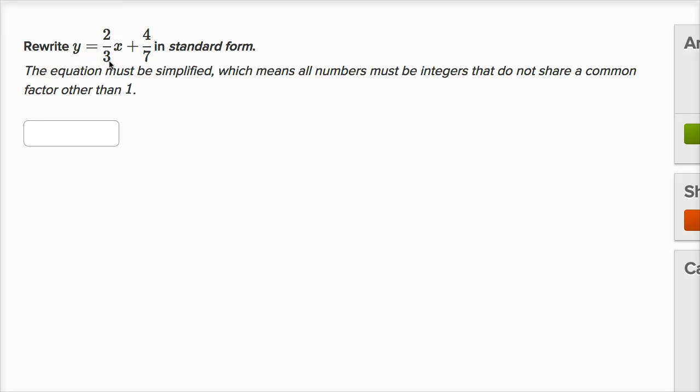Rewrite y equals 2/3x plus 4/7 in standard form. The equation must be simplified, which means all numbers must be integers that do not share a common factor other than one.